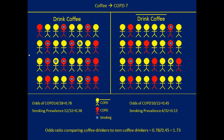The odds of COPD among coffee drinkers is 14 divided by 18, which equals 0.78. Among non-coffee drinkers, it's 10 divided by 22, which equals 0.45. The odds ratio comparing coffee drinkers to non-coffee drinkers is 0.78 divided by 0.45, giving a value of 1.73. Since the odds ratio is greater than one, we see an association between coffee drinking and COPD, and we can hypothesize one of three causal relationships.